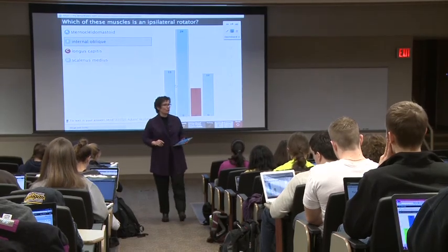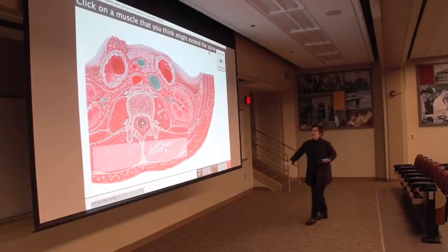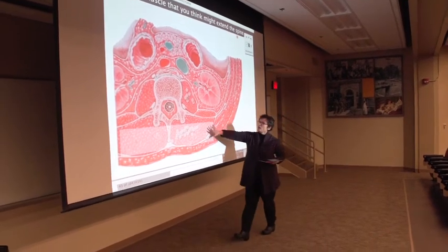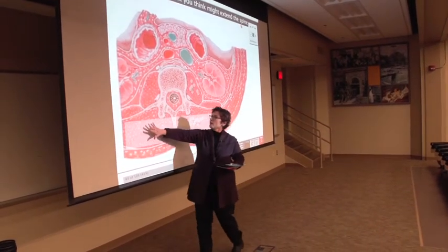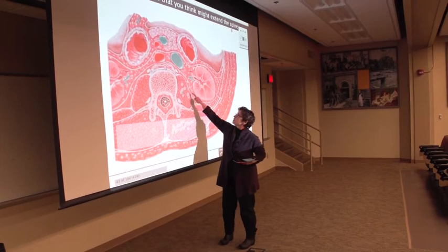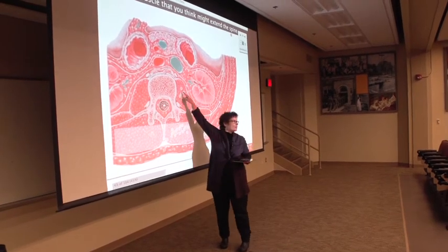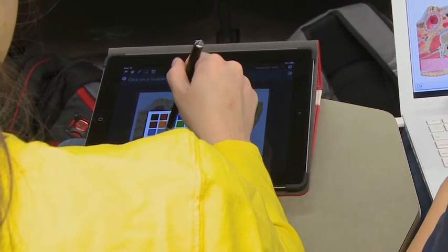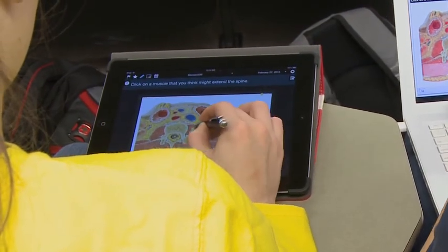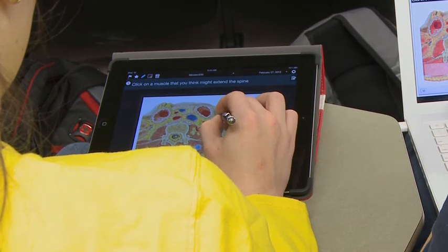Then we can talk about it. The more conventional technology is clickers — you put up a multiple choice question and the students select one of the responses. But that didn't help me with anatomy, because what I want to do is show them images and say: where on this image is the muscle? The image-based questions where students can interact with an image — that's everything for me with such a visually intensive course as anatomy.